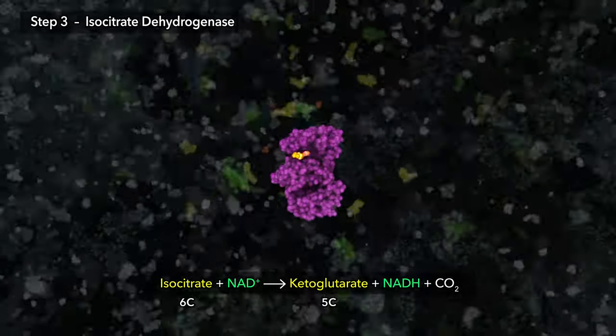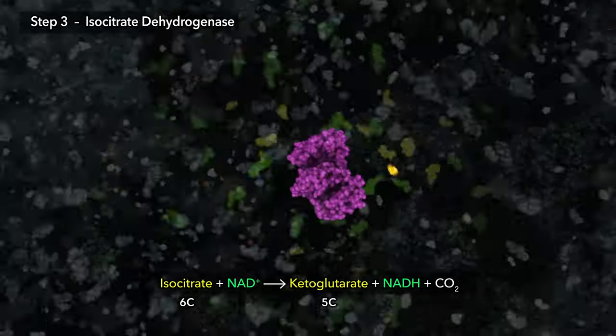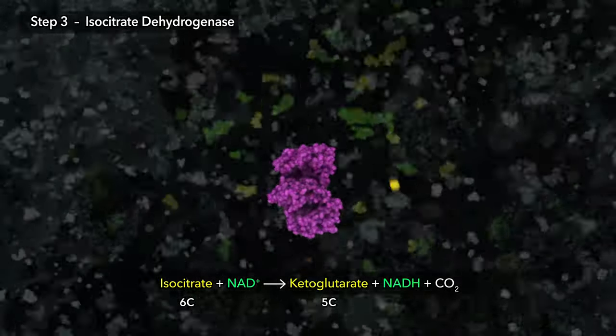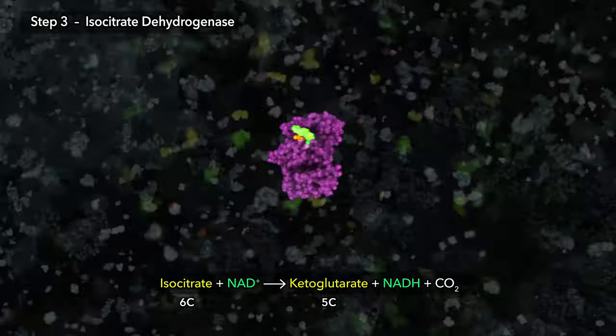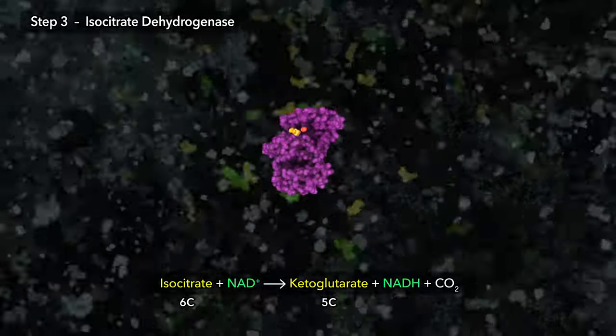During this process, chemical energy is harvested when two electrons are transferred to coenzyme NADH, which delivers them to nearby enzymes of the electron transport chain.